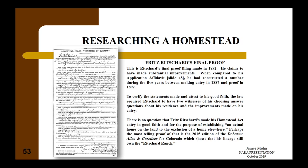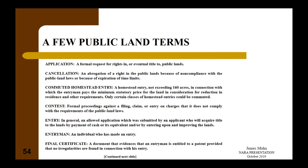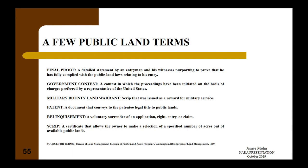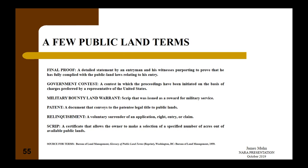As this example shows, finding a homestead entry can prove to be a difficult task, but it can be done. For most homesteads, especially those that went to patent, the research will be straightforward. The presentation also provides a listing of public land terms and a listing of public land states, giving an idea of where homesteads could be entered, along with suggested reading—most of it somewhat academic but informative.